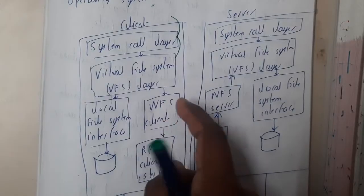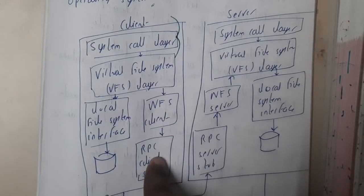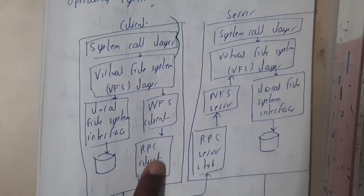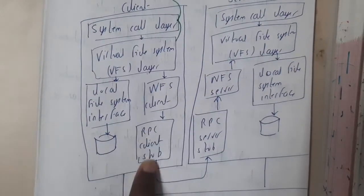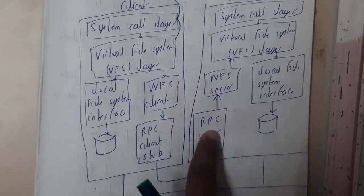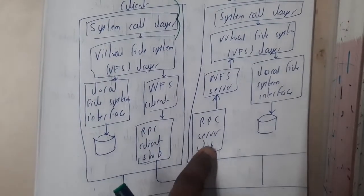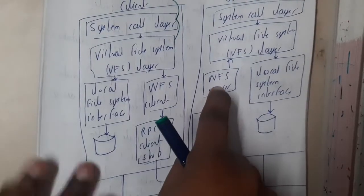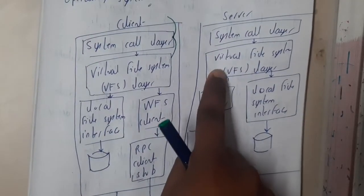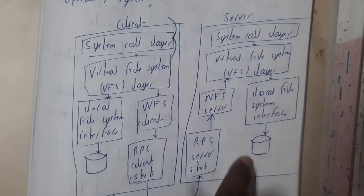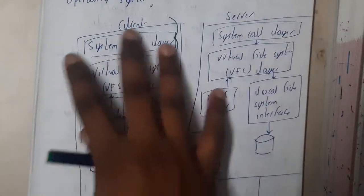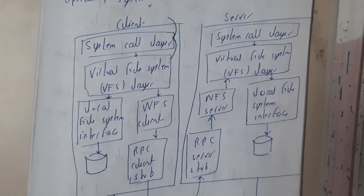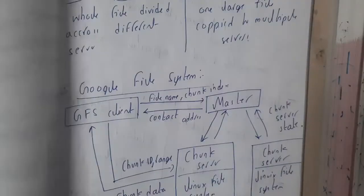If the file is in the local file system it is collected from there; otherwise the request is sent to the NFS client. The NFS client invokes a Remote Procedure Call (RPC) and sends the information to the server's RPC, which requests the NFS server. The search is done and the file is retrieved from local storage on the server side. This is the whole architecture.